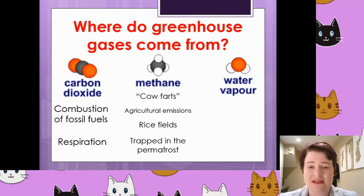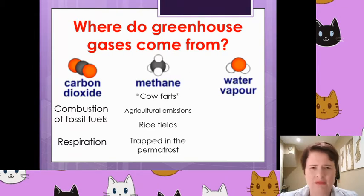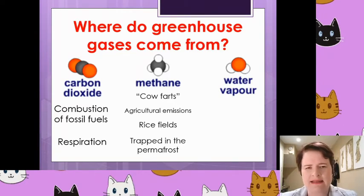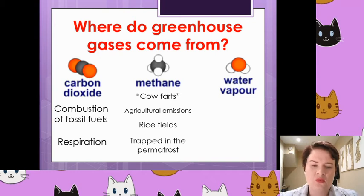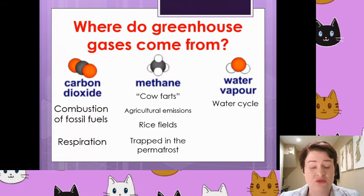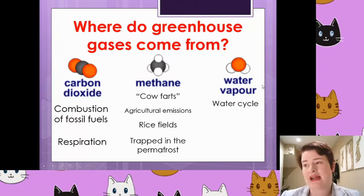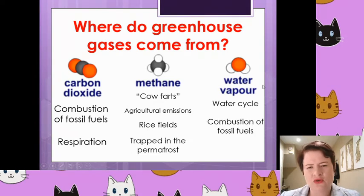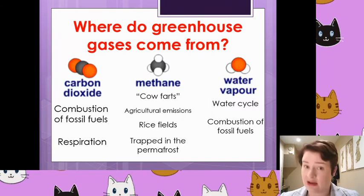The third greenhouse gas that you need to be aware of is water. Water we don't think of as being particularly harmful, and actually in terms of greenhouse gas activity it's on the lesser end of the concern scale. Water vapour mainly comes from the generic water cycle that you should know from geography and potentially biology as well. In terms of human activity, combustion of fossil fuels does produce a little bit of water, but nowhere near as much as the carbon dioxide it makes.